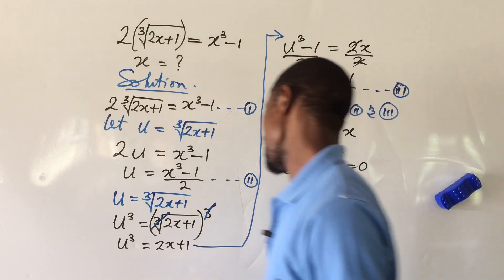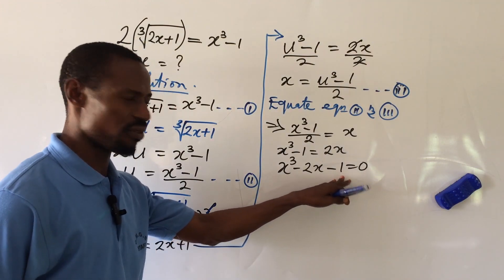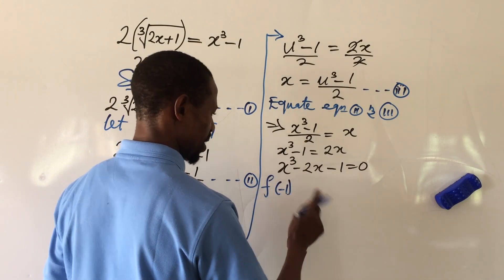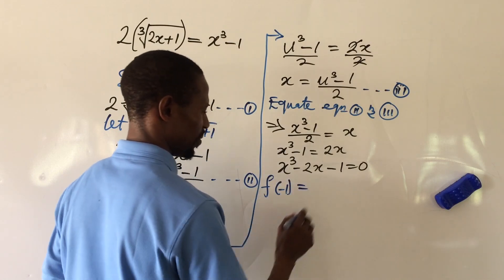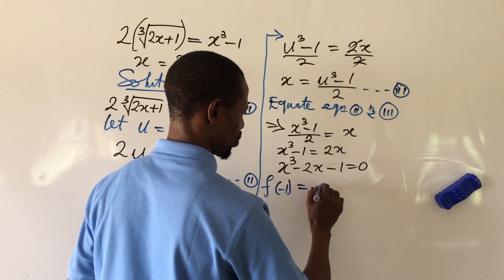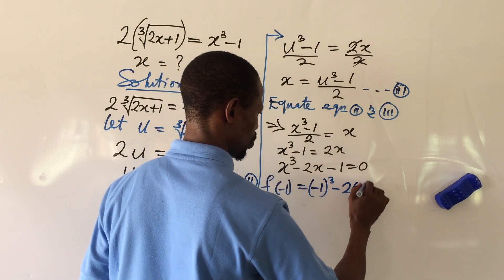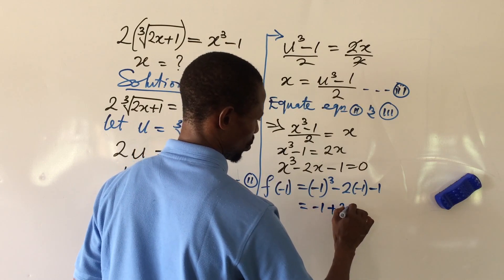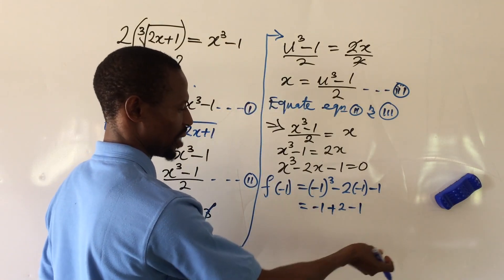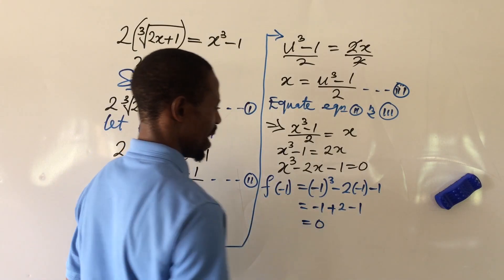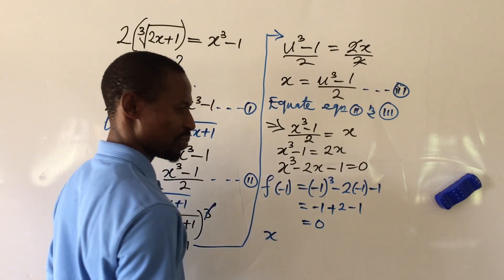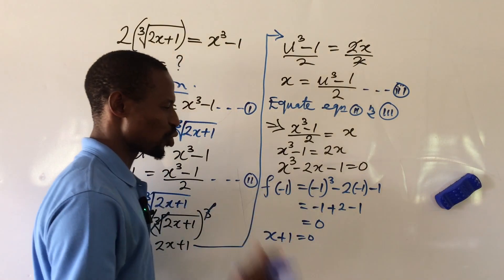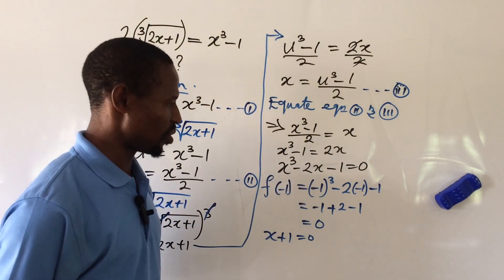We will use the trial-and-error method to find our roots. Bringing out the factors of 1, let's check f(−1): (−1)³ − 2(−1) − 1 = −1 + 2 − 1 = 0. So x = −1 is a root, and therefore (x + 1) is one of the factors of this cubic polynomial.